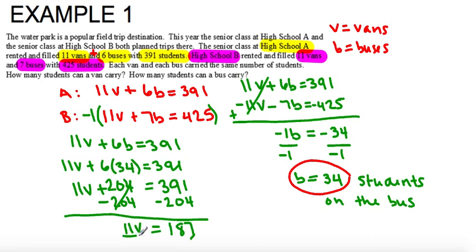To get V by itself I divide everything by 11. So V equals 17, and it's 17 students on a van or in the van.